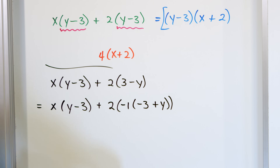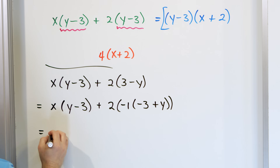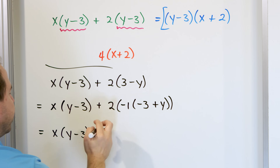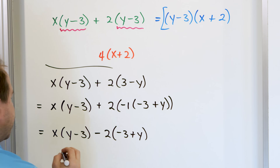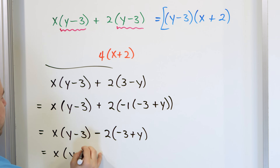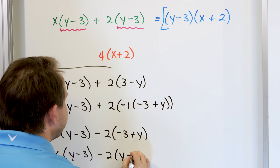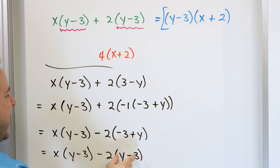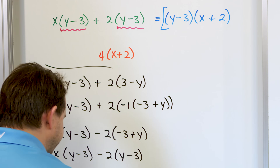Working through the problem: we have x(y - 3), and the negative 1 is factored out but multiplied by the 2, giving us minus 2 times (negative 3 plus y). In the next step, since it's negative 3 plus y, I can change the order of addition to write it as y minus 3. Now I have (y - 3) as a common term in both parts of the expression.